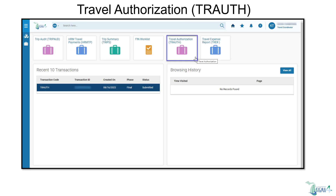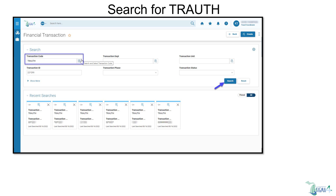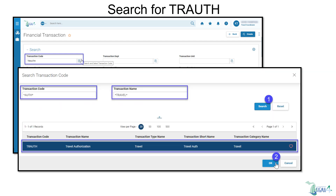We can also search for troughs by selecting the travel authorization quick link. This quick link might be used to search for troughs that are not in your transaction unit. The transaction code trough pre-populates and you can use filters to narrow your search for a specific travel authorization. If the trough is removed from the transaction code field, you can select the search and select transaction code icon, and use search fields as well as the asterisk wildcard character to narrow your search.